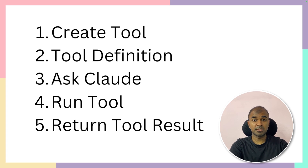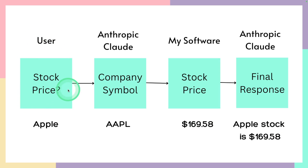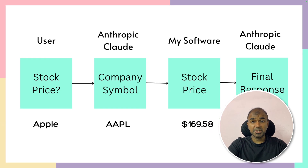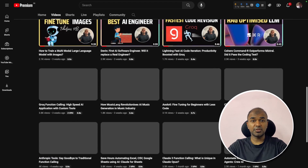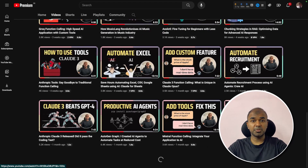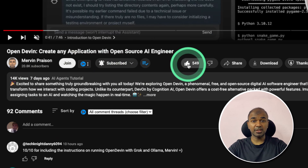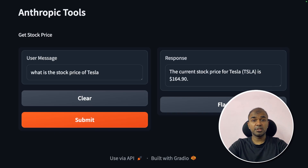Imagine the user asking 'What's the stock price of Apple?' — Anthropic Claude is going to use the get stock price tool, and finally we get that response. I'm going to take you through step-by-step on how to do this. I regularly create videos about artificial intelligence on my YouTube channel, so do subscribe and click the bell icon to stay tuned. Make sure you click the like button so this video can be helpful for others. We will also create a user interface.